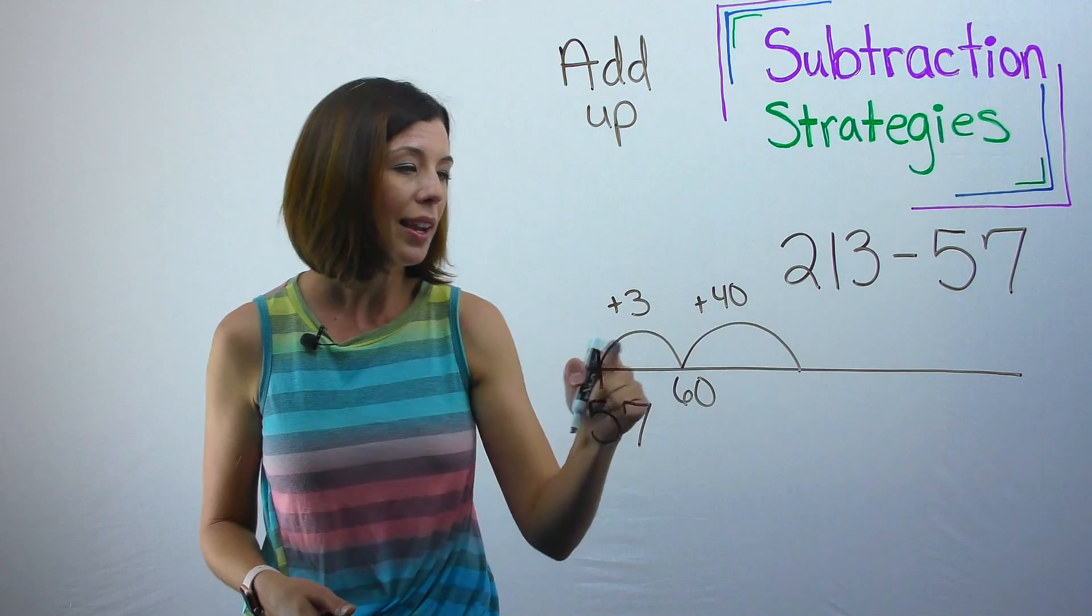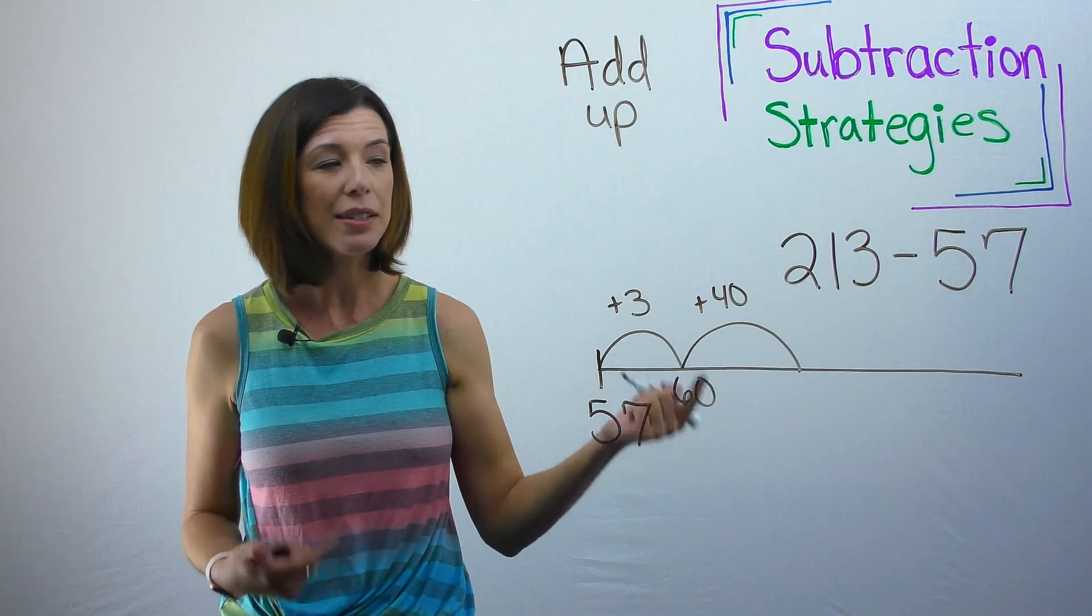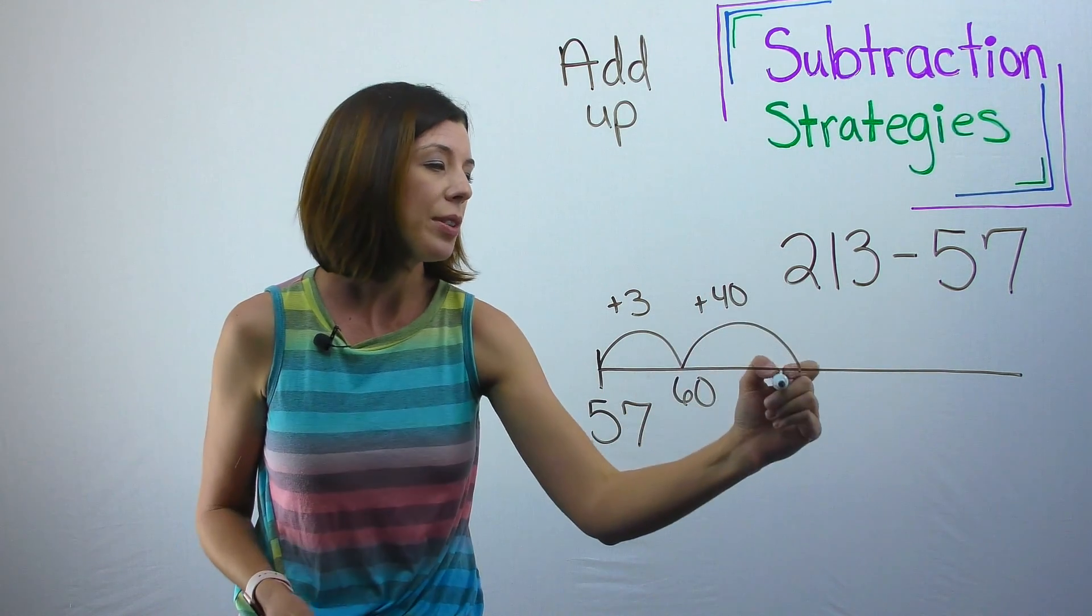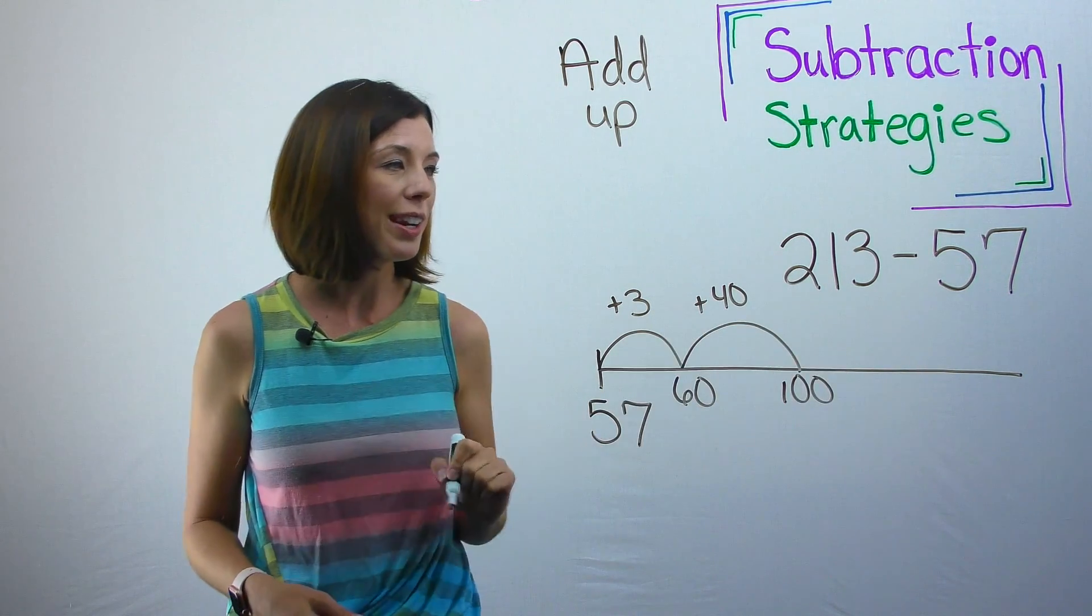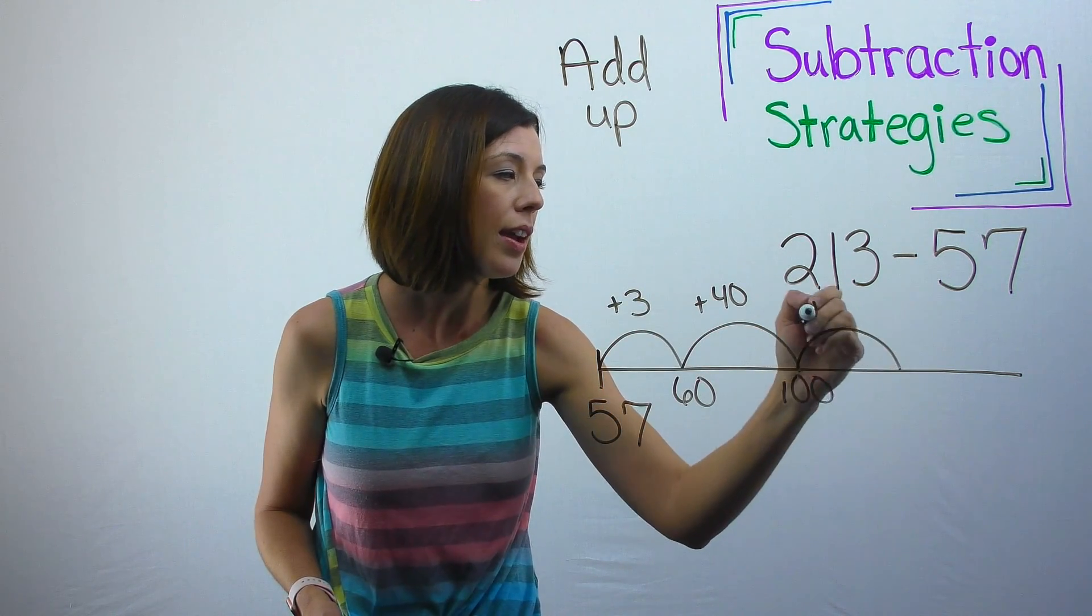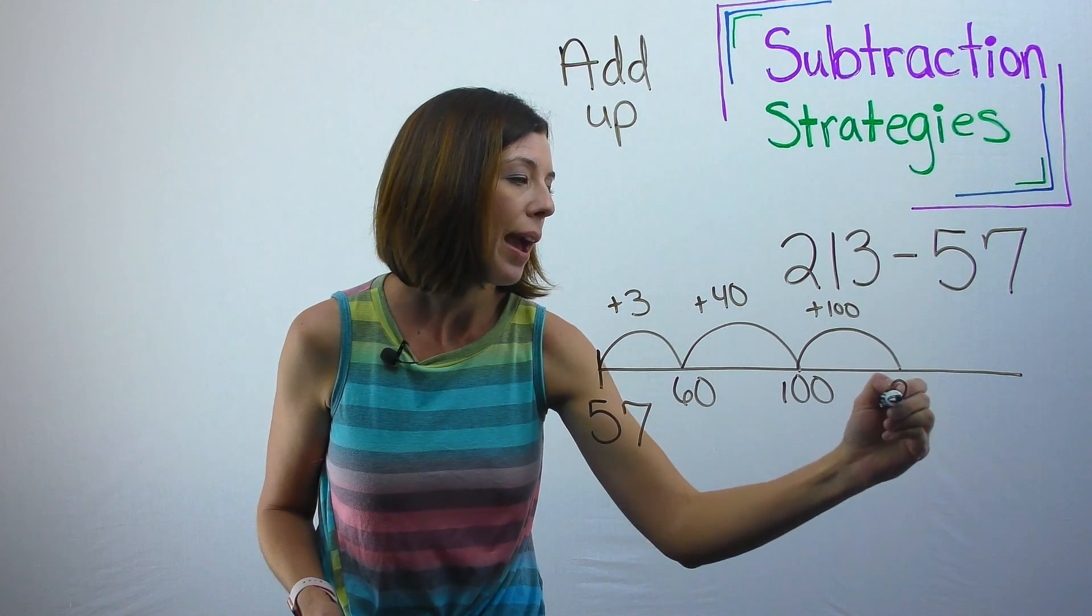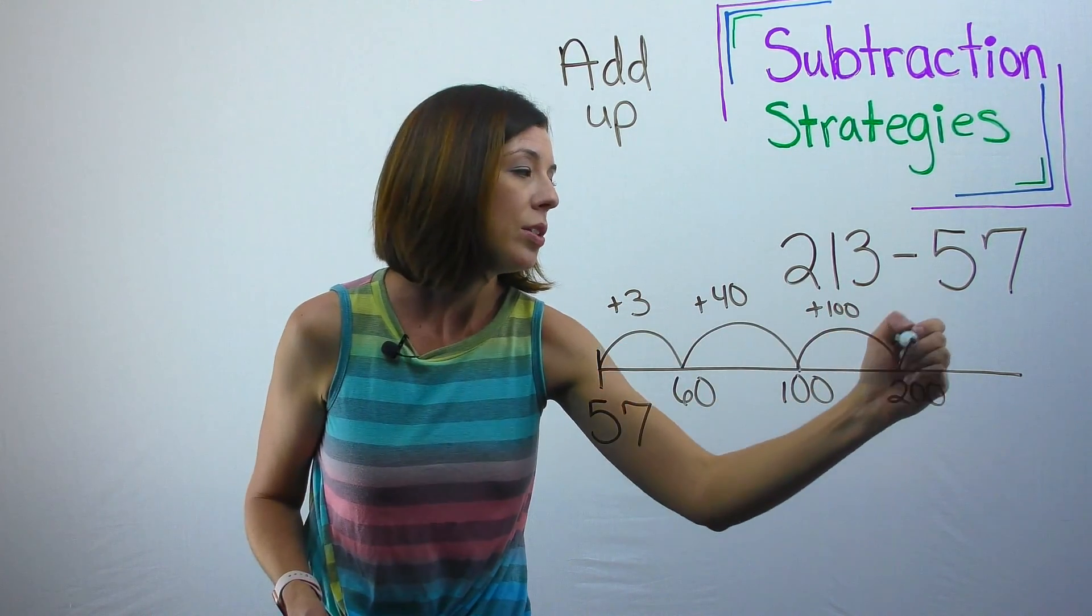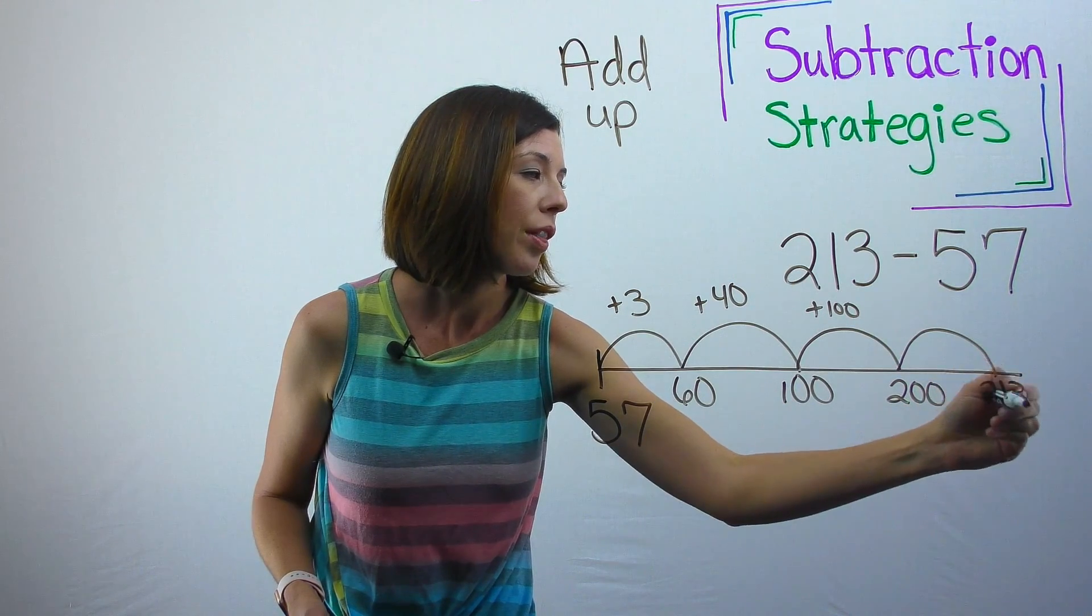Again, notice that my hop of 3 is about the same size as my hop of 40. That is okay because it's an open number line. All right, so here I am at 100. Now I can easily hop another 100 to get to 200. So let me do that. Plus 100, now I'm at 200. And then I can just hop 13 to get to 213.